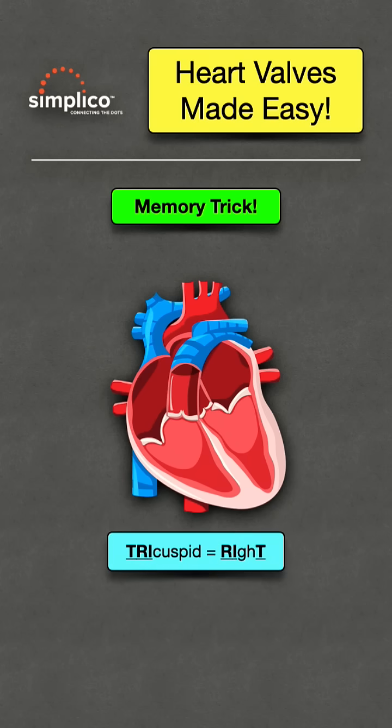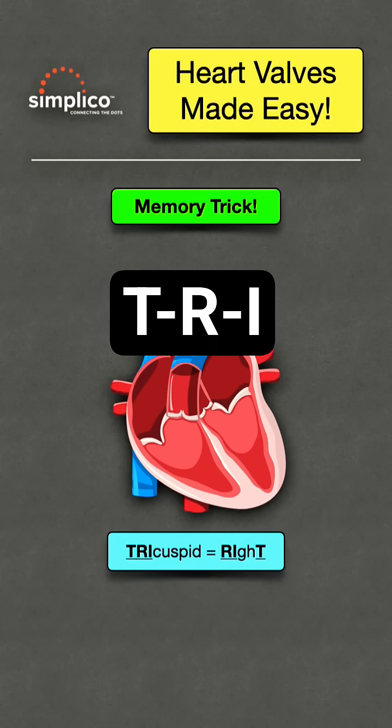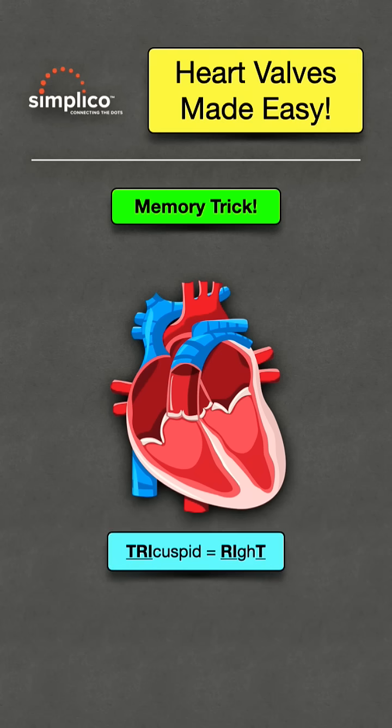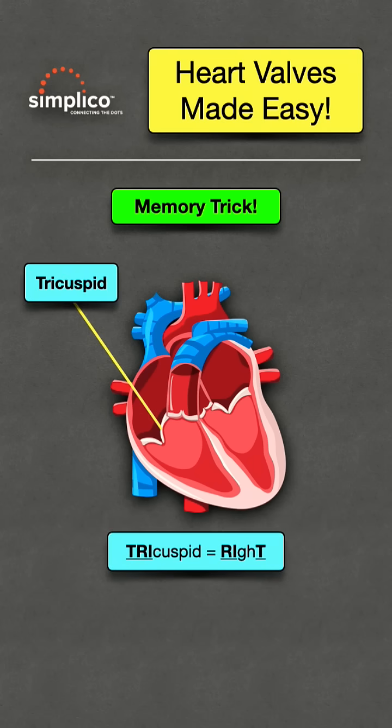First, use the TRI in tricuspid to remember the letters TRI. The letters TRI also appear in the word right. This will help you remember the tricuspid valve is on the right.